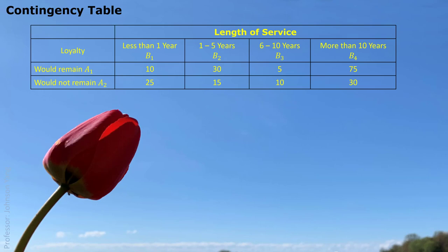We have four different categories listed: less than one year, one to five years, six to ten years, and more than ten years. These four categories are the possible values for the variable length of service.